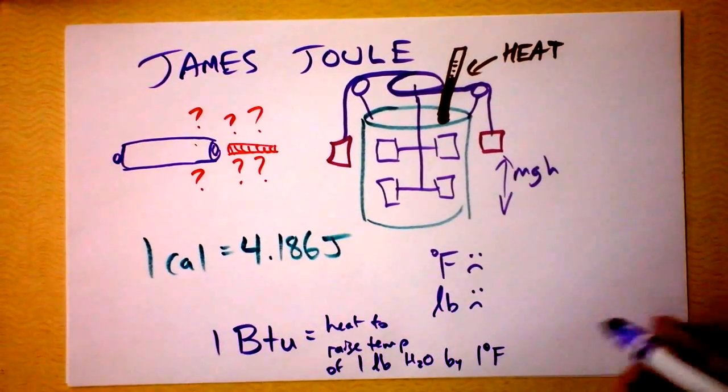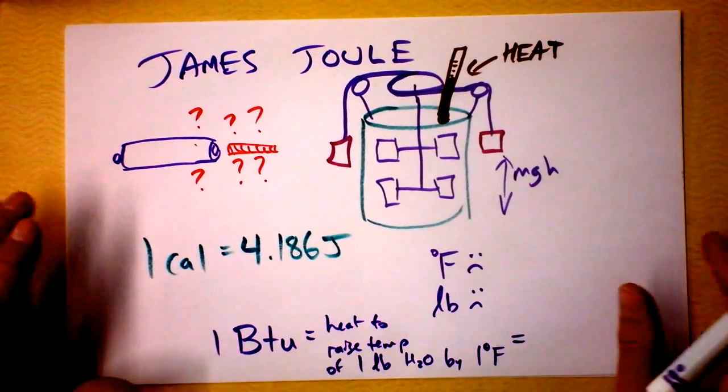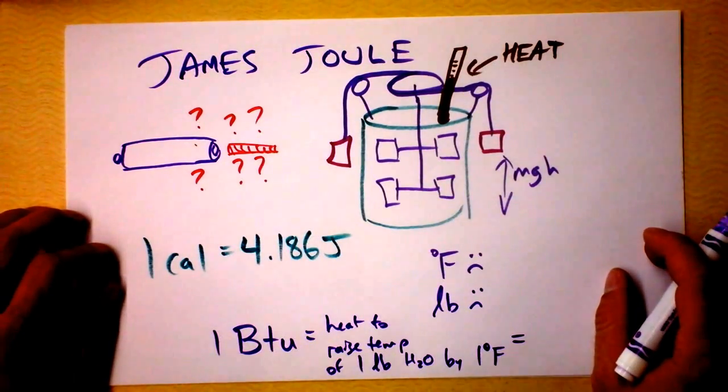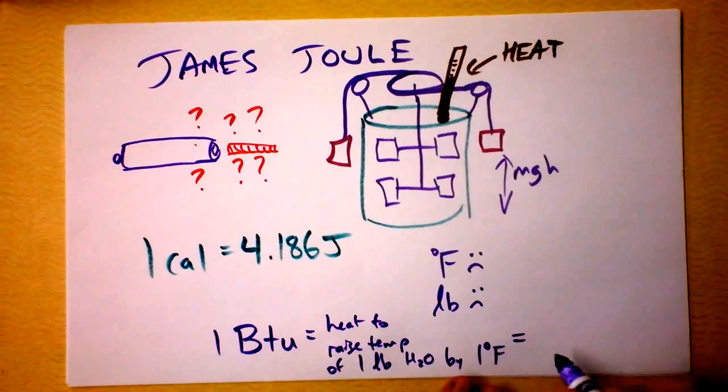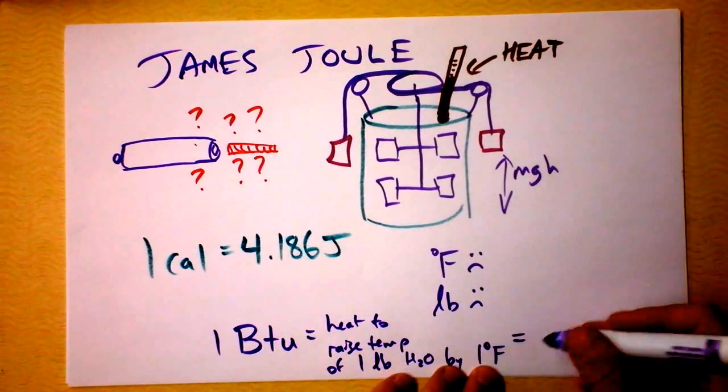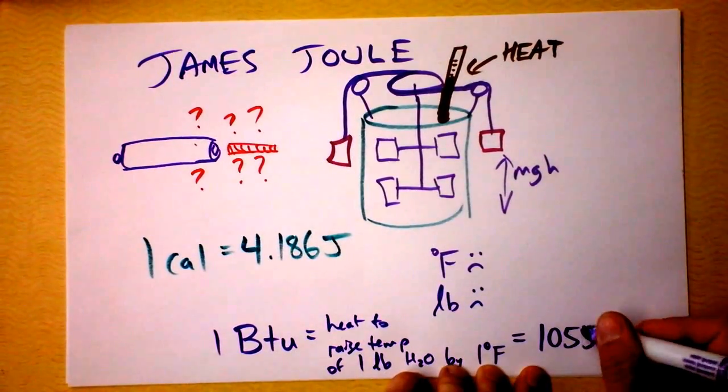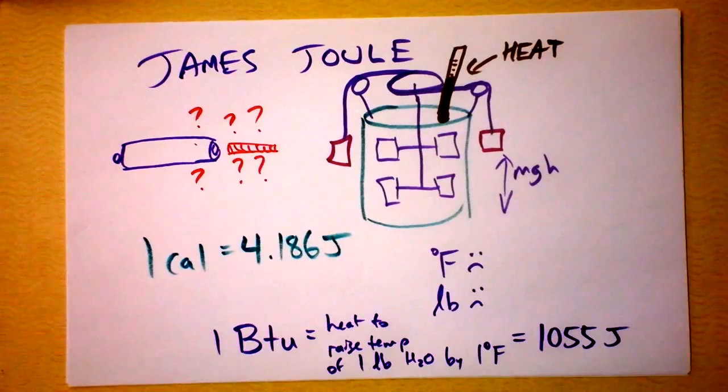Anyway, if you find anybody still using it—my gas company still uses it for the energy contained in natural gas, how frustrating—if you find anybody still using it, you can immediately get back into joules by knowing that a British Thermal Unit is 1055 joules. Much more pleasant.